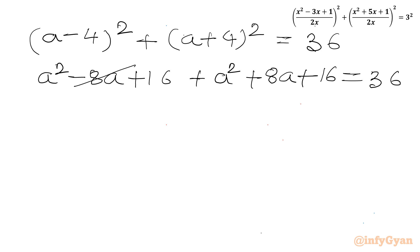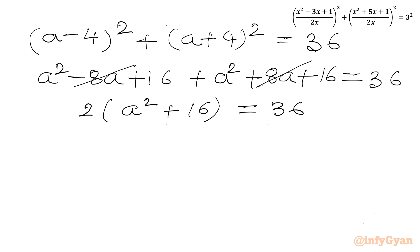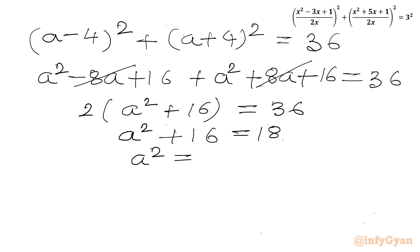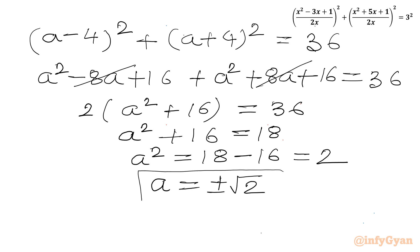Now -8a and +8a cancel out. So 2a² + 16 = 36. Dividing by 2: a² + 16 = 18. Taking 16 from both sides: a² = 2. Taking square roots both sides: a = ±√2.